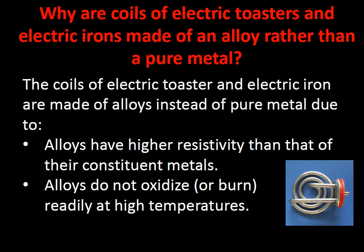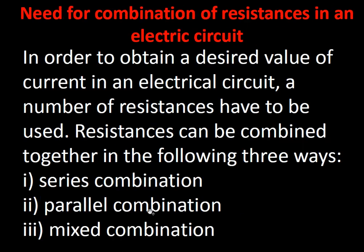The coils of electric toasters and electric irons are made of alloys rather than pure metals because alloys have higher resistivity — they do not allow excess current to pass. Alloys also do not oxidize or burn easily at high temperatures. Resistance can be combined in three ways: series, parallel, and a mixed combination of both, to obtain desired current values in a circuit.